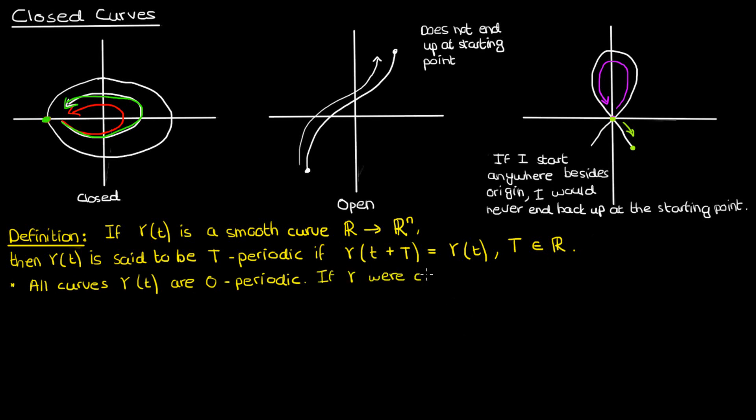Additionally, if gamma were a constant function, then gamma would be capital T periodic for any real value of capital T. To avoid these two degenerate cases, we can construct another definition, that of a closed function.